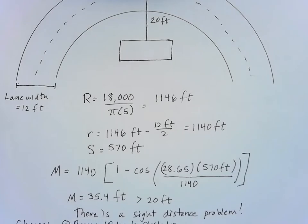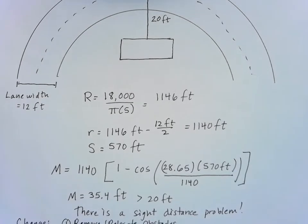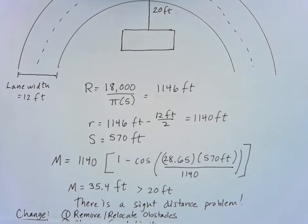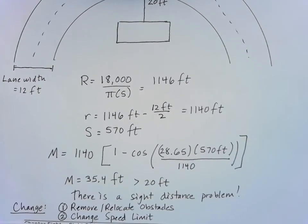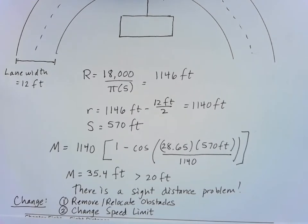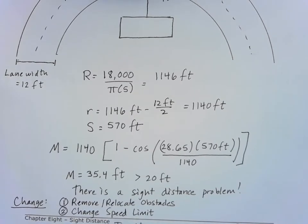We have a lot of choices. We could remove or relocate the obstacles, if possible. We could change the speed limit. When we change the speed limit, that's going to change our stopping site distance as well. So if we think about changing that speed limit, what speed would make that okay? So plug in a couple different values here.